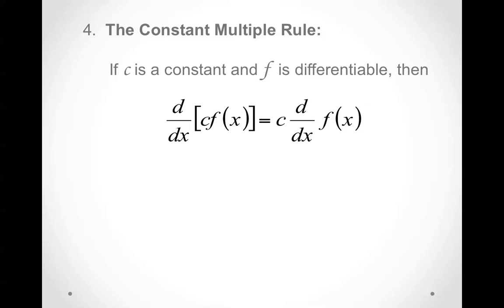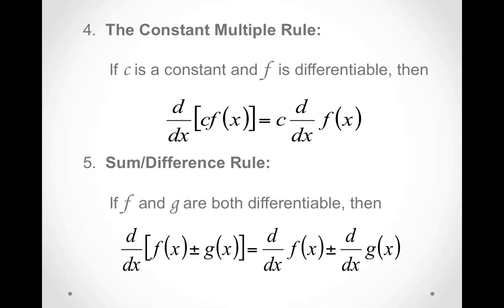The constant multiple rule: If c is a constant and f is differentiable, then we can pull the c out front. The sum and difference rule: If f and g are both differentiable, then we can add the derivative of f plus the derivative of g if it's a sum, or subtract the derivative of f minus derivative of g if it's a difference.